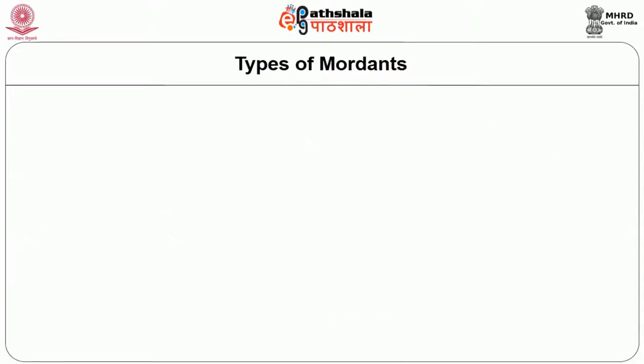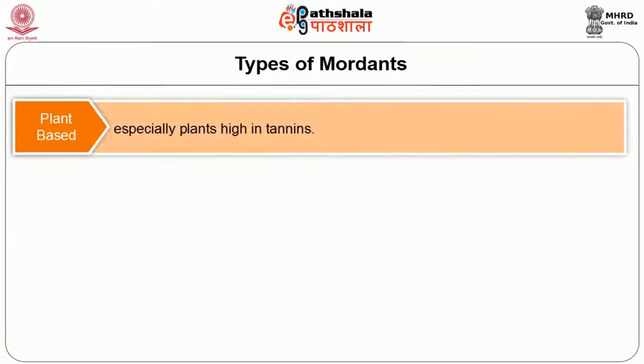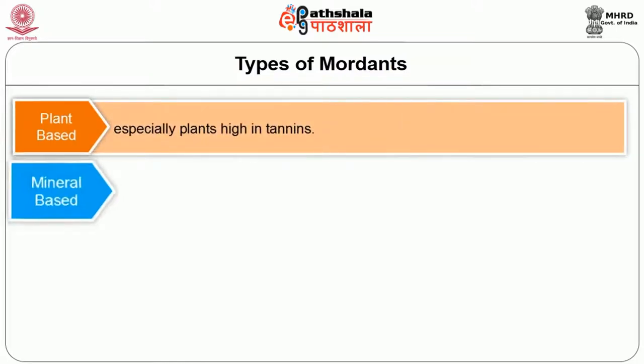Next, we will look into the types of mordants. Mordants come primarily from two groups: plant-based, especially plants high in tannins, and mineral-based such as alum, iron, tin, copper sulphate and chrome.